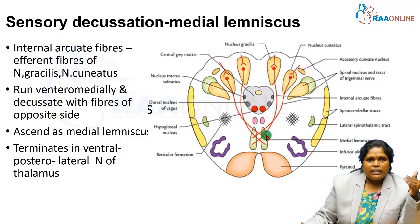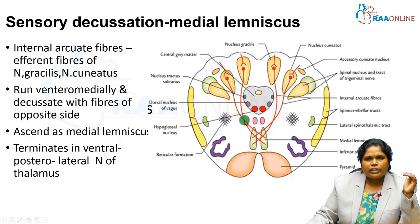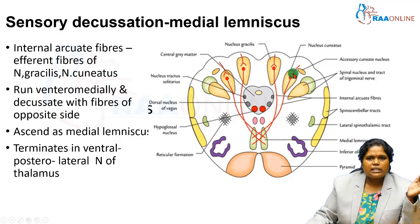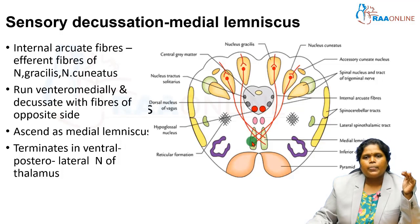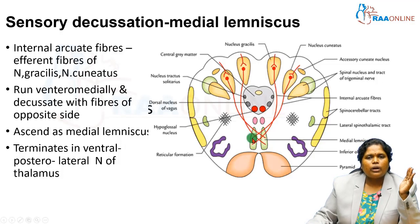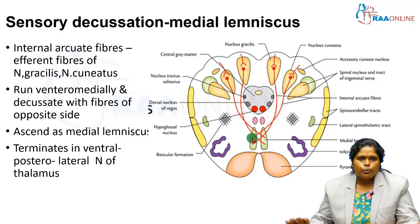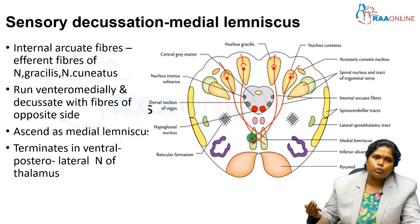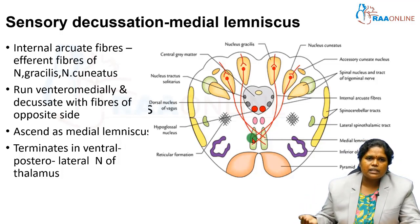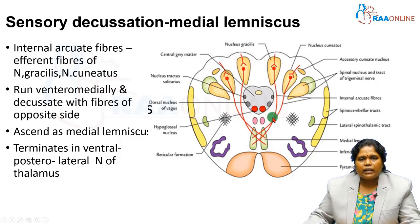In sensory decussation, the decussating fibers are second-order neurons. These fibers start from the nucleus gracilis and nucleus cuneatus and are known as internal arcuate fibers. They decussate completely — 100% decussation occurs here — and then ascend as the medial lemniscus, which carries proprioception, vibration, and two-point discrimination, the same sensations carried by the posterior column tract (fasciculus gracilis and cuneatus).